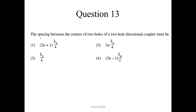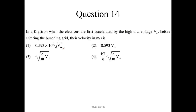Question number 13. The spacing between the centers of two holes of a two-hole directional coupler must be (2n+1)λ/4. Question number 14. In a klystron, when electrons are first accelerated by the high DC voltage V0 before entering the bunching grid, their velocity in meters per second is 0.593 × 10⁶ × √V0. So option 1 is the correct answer.